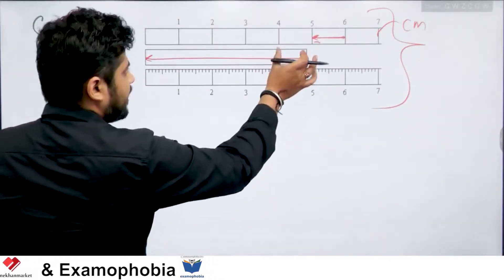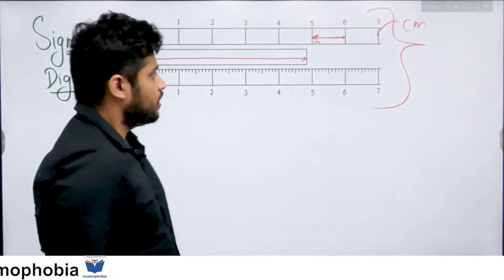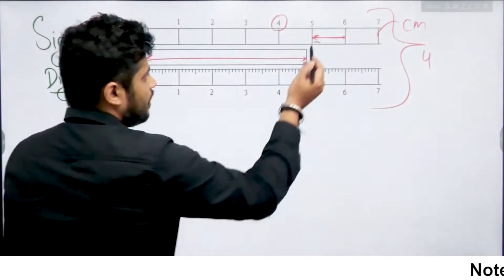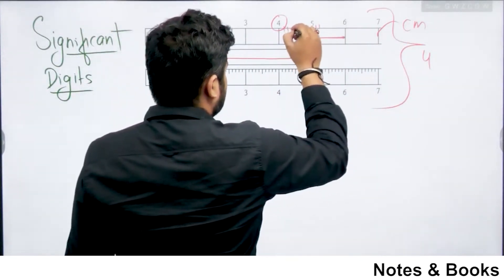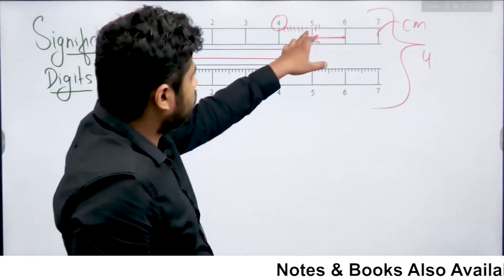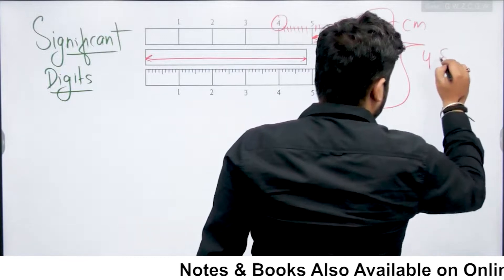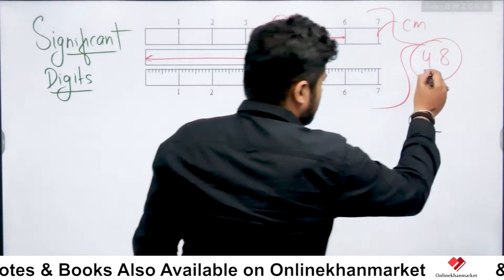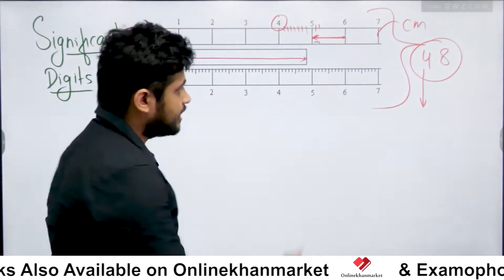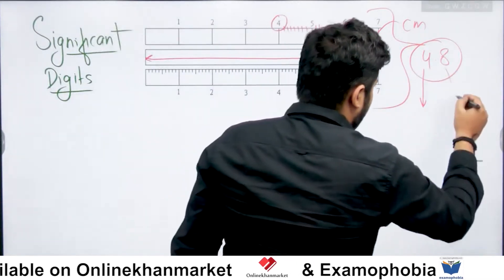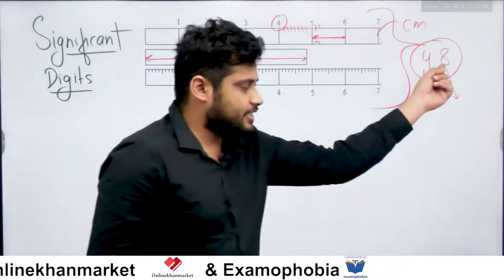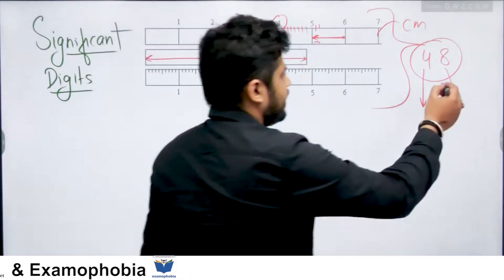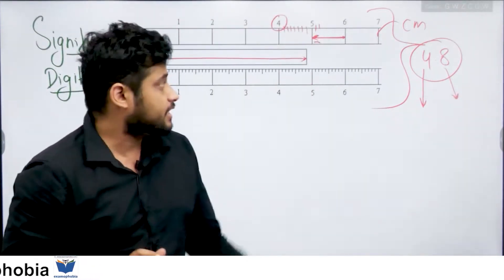Agar hum is object ki length measure kar rahe hain, to hum dekh rahe hain ki iska end 4 aur 5 ke beech mein hai. So 4 to pakka hai. Its measured value hum likhenge 4 point kuch. Mentally hum is poori division ko 10 bhaagon ke andar divide kar denge. Aur hum dekh rahe hain yeh kuch 8th division ke aaspaas hai, to iski value roughly 4.8. Toh 4.8 ek measured value hai. 4 is most reliably known digit. Sab se kam reliable jo digit yahan par hai woh hai 8, kyunki 8 digit jo aapko mili hai woh eye estimation se mili hai. Aapne aankhon se dekh kar anuman lagaya, jo estimation kiya, yeh 8 wahan se aaya. Jo hum best measure kar sakti thi is scale se, hum ne kar liya. Aur yeh value nikal kar aa rahi hai 4.8 cm.